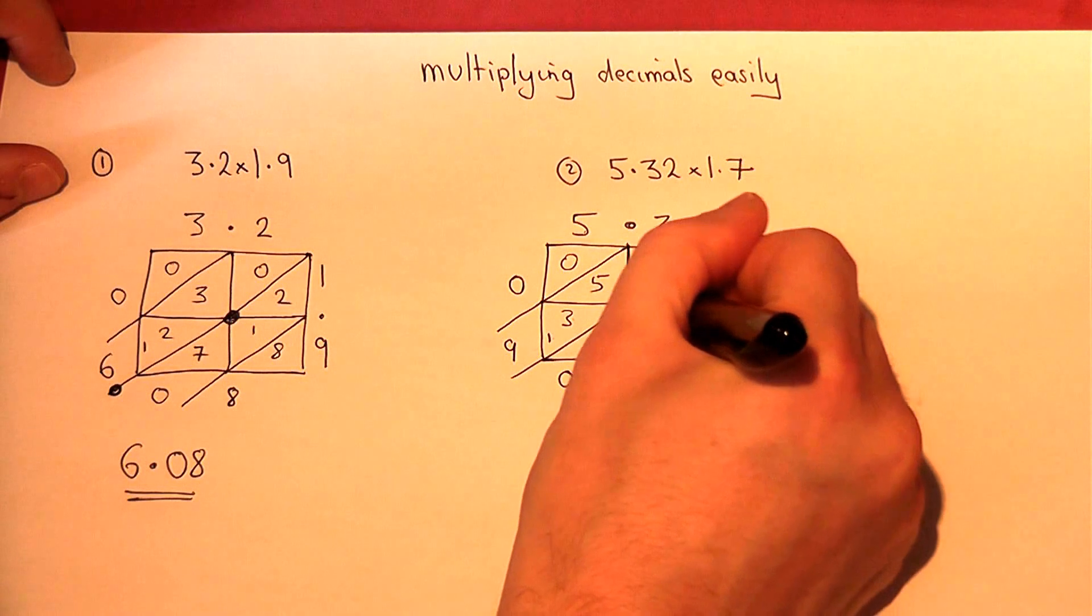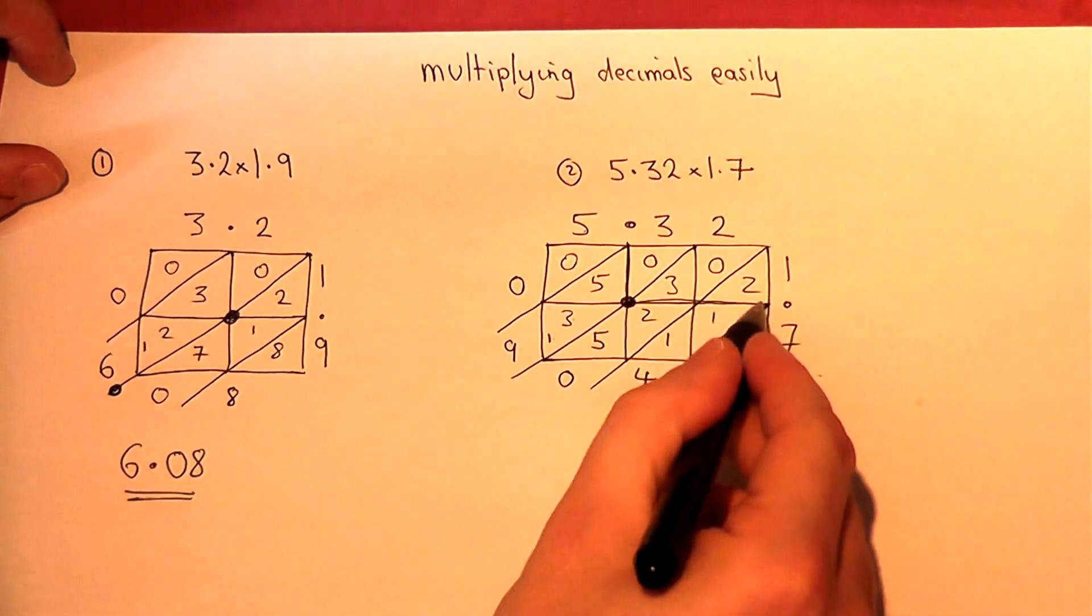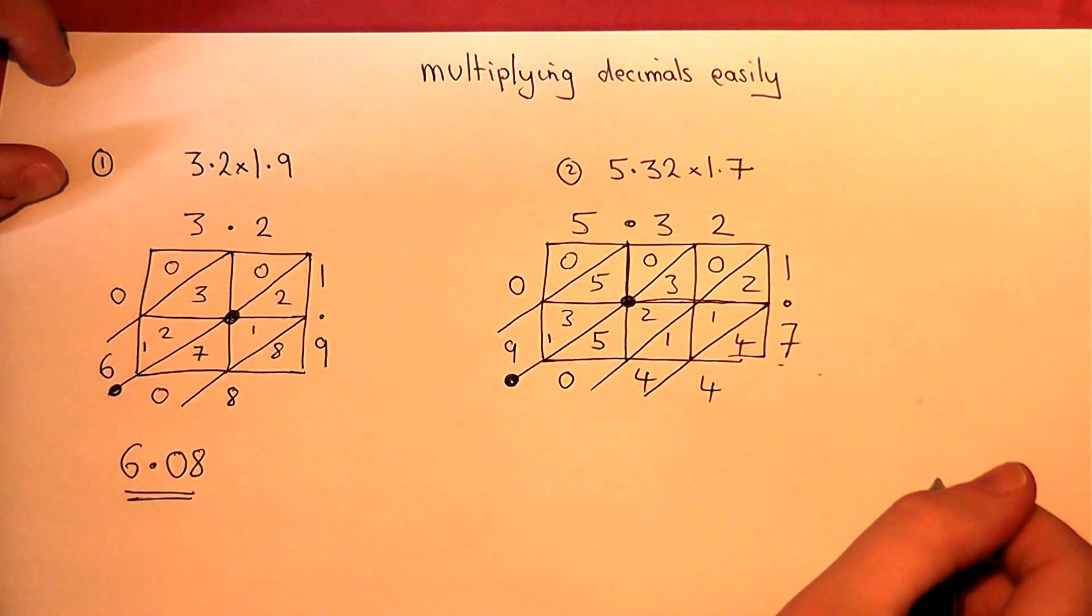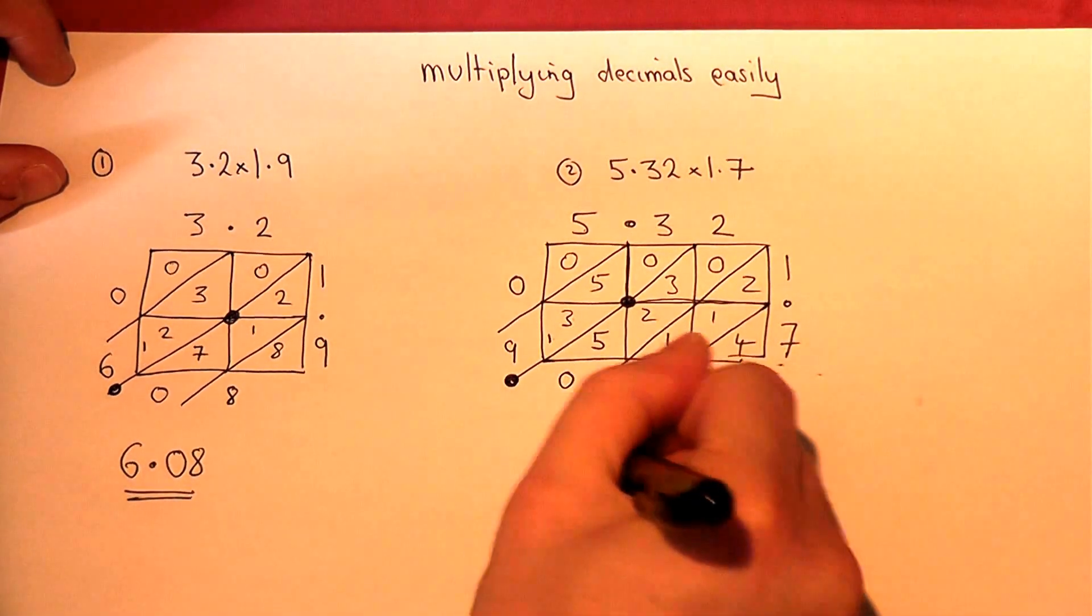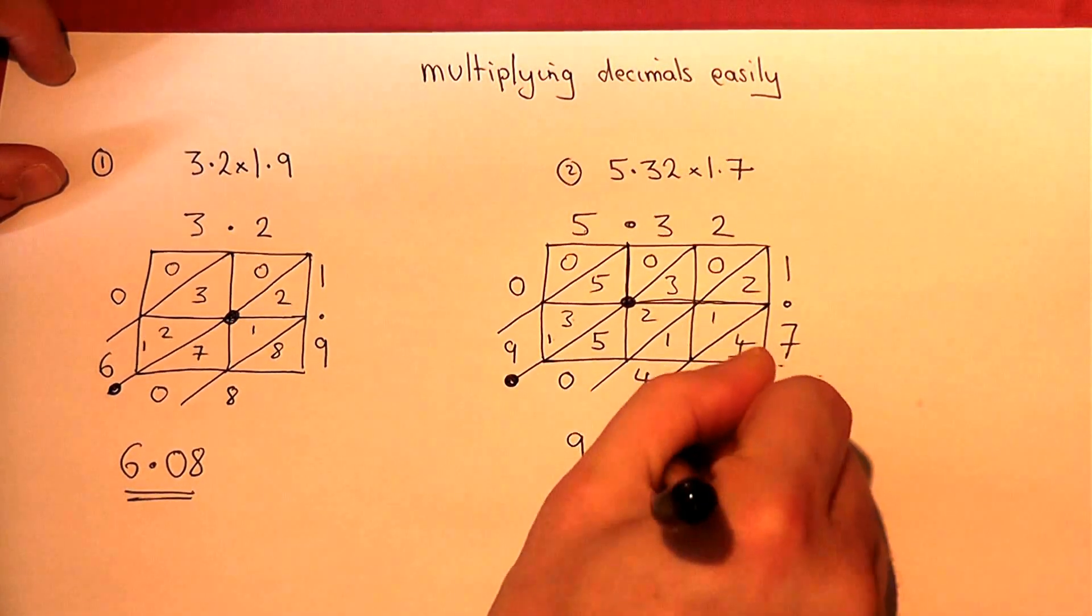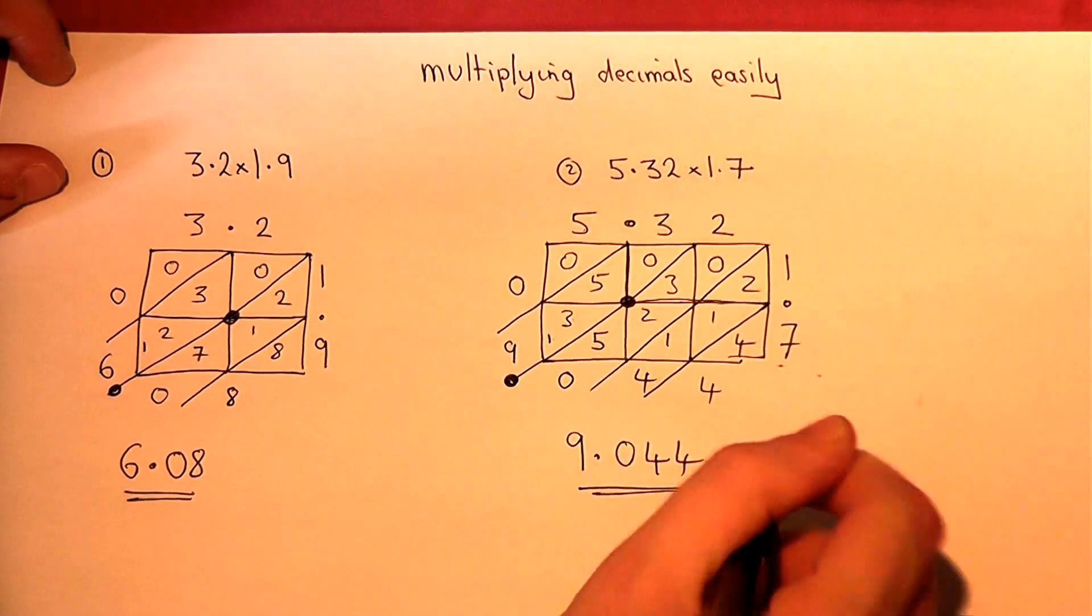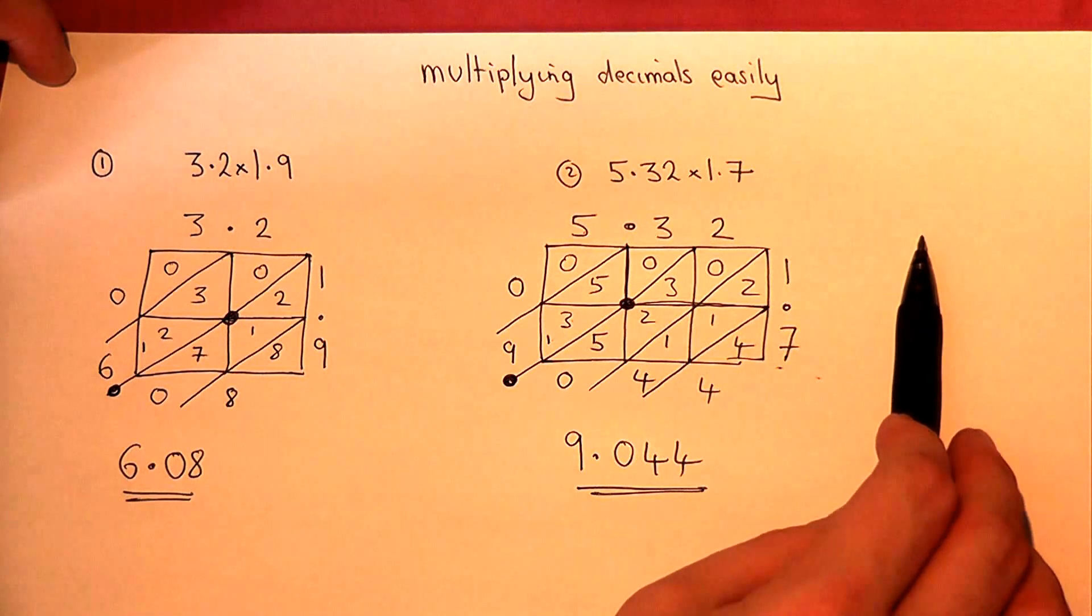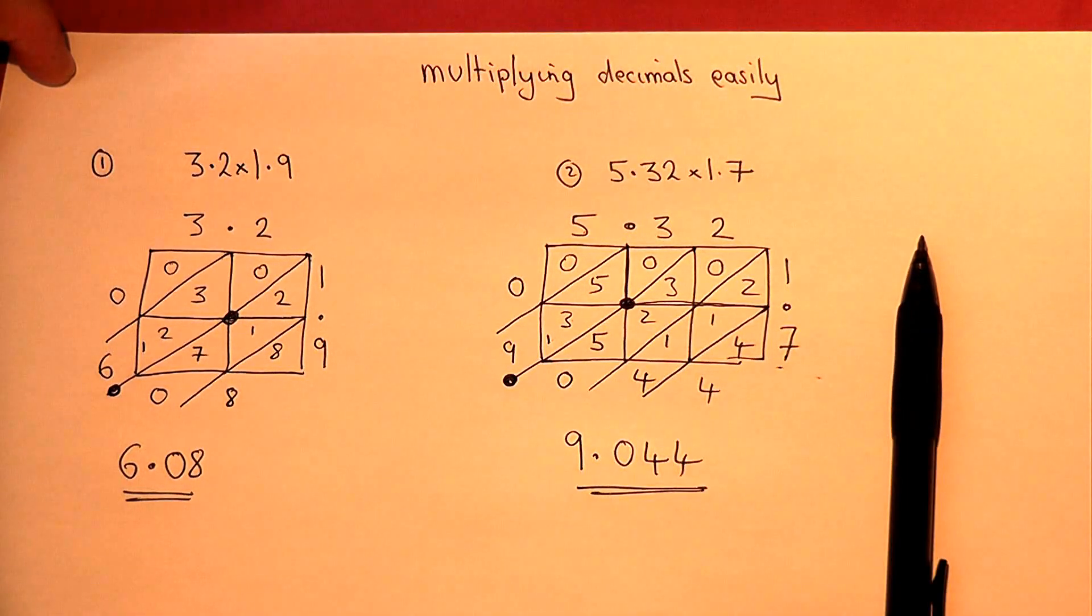The points meet here. I go down and across to find that. It slides down to this position. So, the answer is 9.044. So, there we go. Timesing together decimals easily and rapidly.